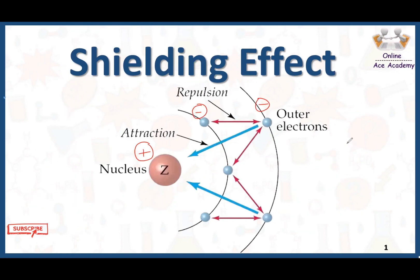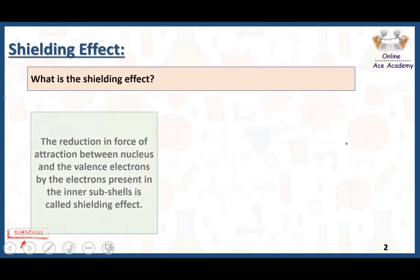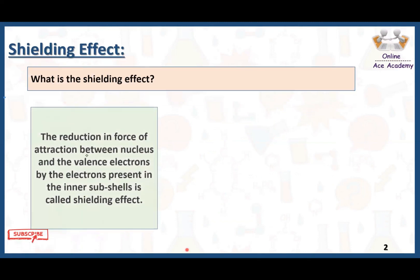The nucleus attracts the electrons towards itself. The inner electrons act as a shield for the outer electrons, so the nuclear attraction for the outer electrons is less compared to the inner electrons. This is called the shielding effect: the inner electrons are shielding the nuclear attraction for the outer electrons. The shielding effect is defined as the reduction in the force of attraction between the nucleus and the valence electrons by the electrons present in the inner subshells.